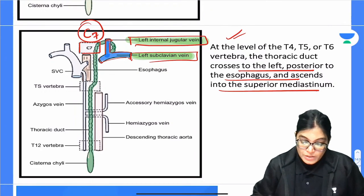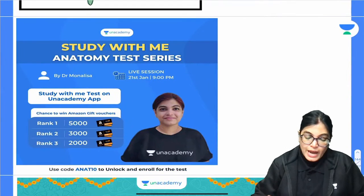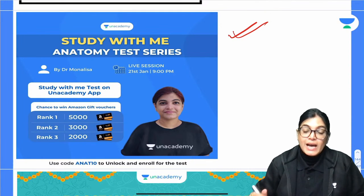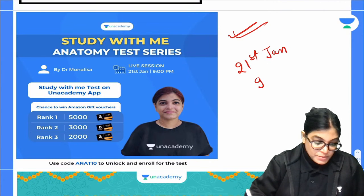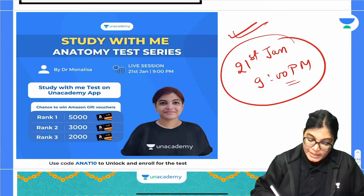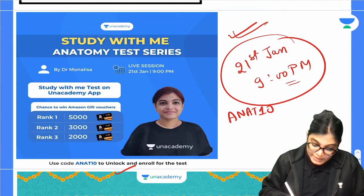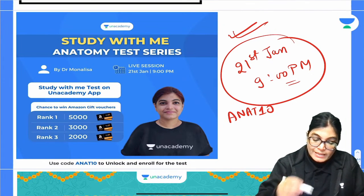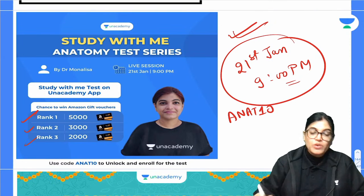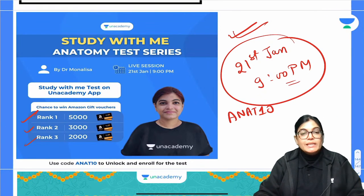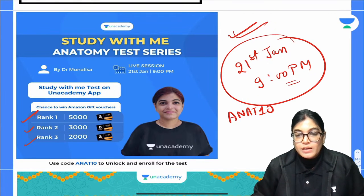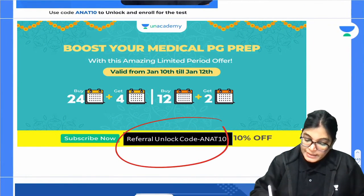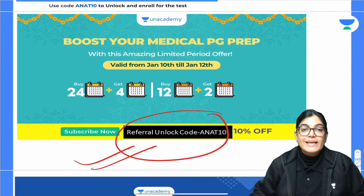That concludes all the MCQs for this session. The anatomy test is on 21st January at 9 PM — you can enroll using code ANAT10. Exciting prizes for ranks 1, 2, and 3: 5,000, 3,000, and 2,000 Amazon vouchers. Use code ANAT10 for 10% extra discount on subscriptions.